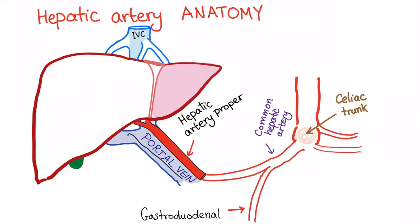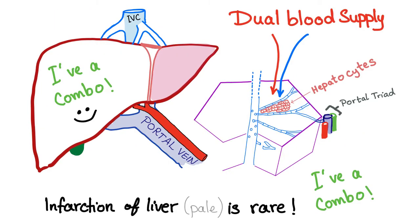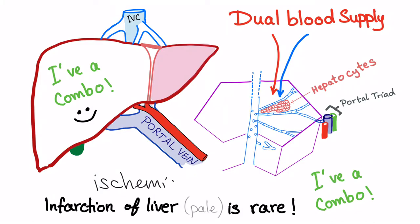Here is the portal vein, and we also have the bile duct. The liver is a special organ because it has a dual blood supply — the hepatic artery and the portal vein — and both of them end up in vessels called sinusoids. That is why infarction of the liver, meaning pale infarction, is rare. In other words, ischemic hepatitis is rare because of this dual blood supply.